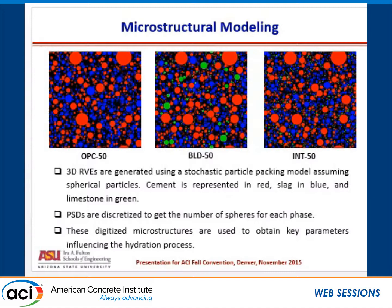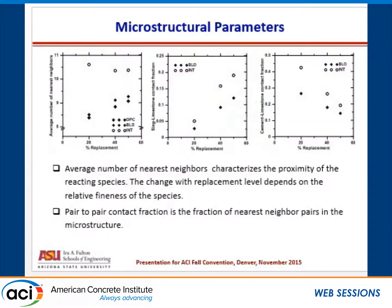How do we generate this? We know the particle size distributions of slag and cement. We discretize those PSDs to get the number of spheres for each different phase to fit in our microstructure model. Based on these microstructure models, we are able to predict some interesting properties of our microstructure. Here are some of the properties extracted from those microstructures, plotted as percentage of total replacement.